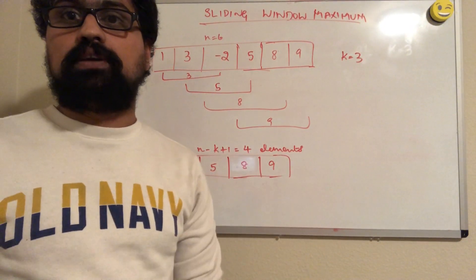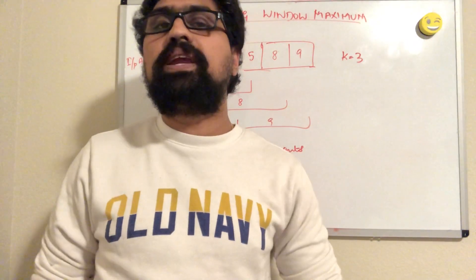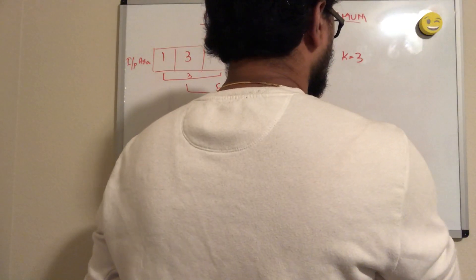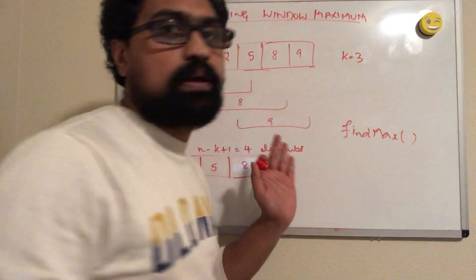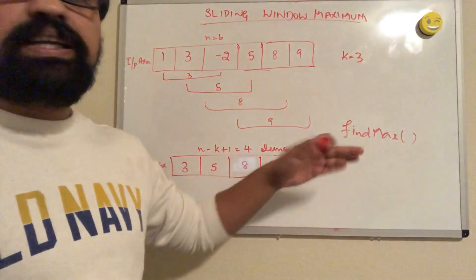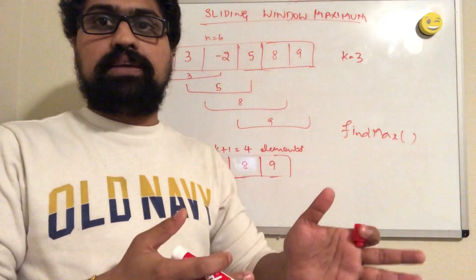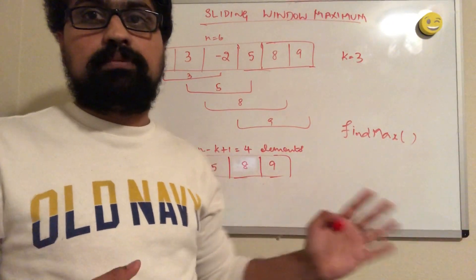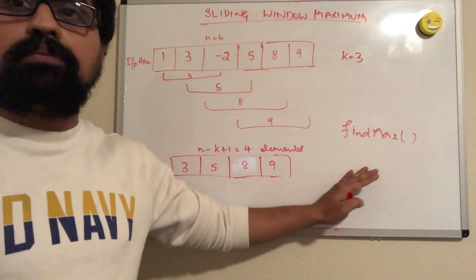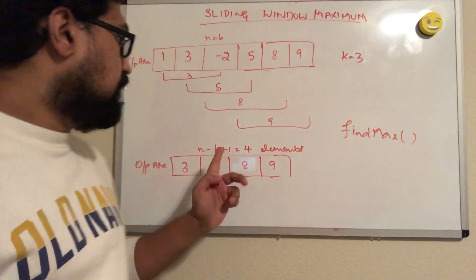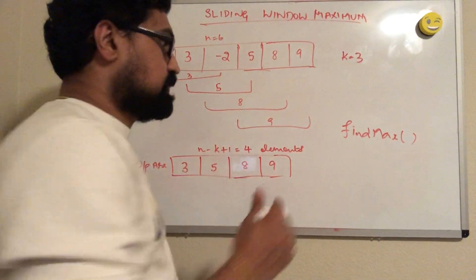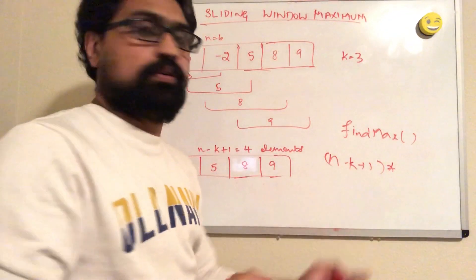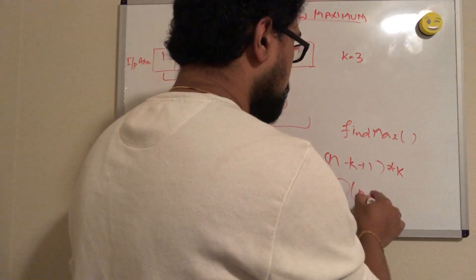Now let's try to see how we can solve it. The brute force solution is: we can have a find max function that will take in the elements of the sliding window as input. This function iterates through every element of the sliding window and finds the maximum. We repeat this process for all windows. We have n minus k plus 1 windows and k elements in each window, so the time complexity is O(n times k).